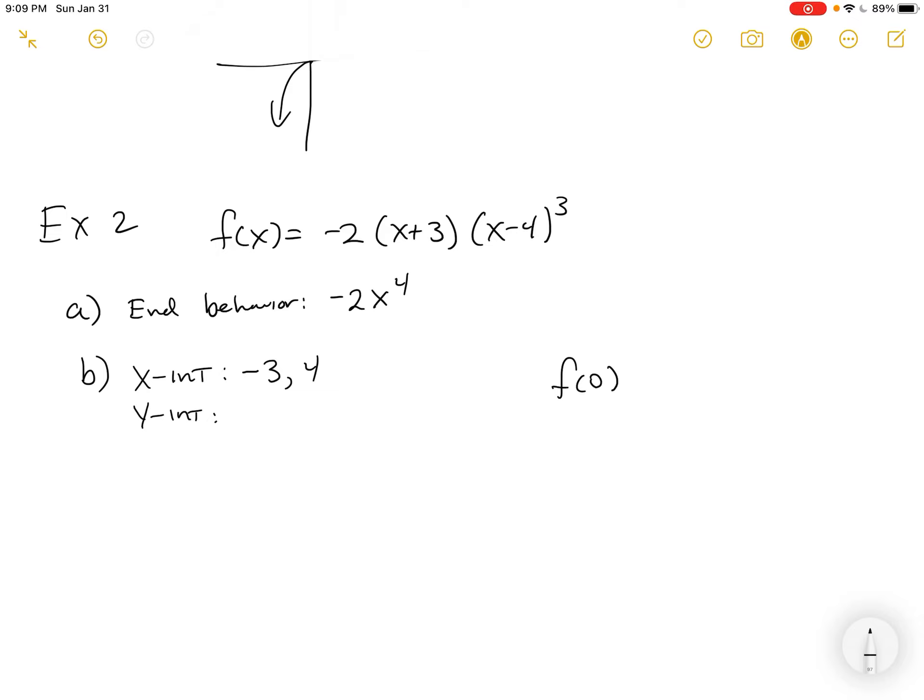That's negative 2 times (0 + 3) times (0 - 4) cubed. Which is negative 2 times 3 times negative 4 cubed. Which is negative 2 times 3. Now, 4 times 4 is 16, times 4 is 64, and it would be negative. And so, now we've got negative 6 times negative 64, and what's that equal to?